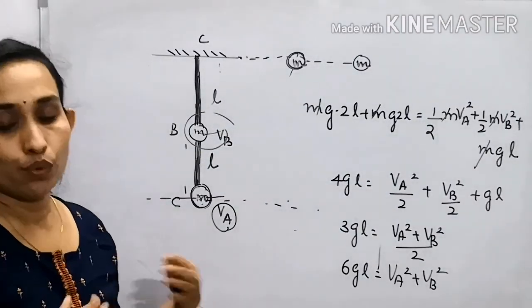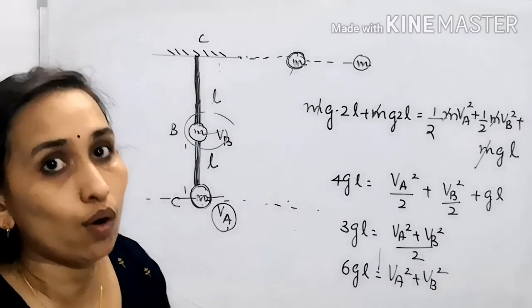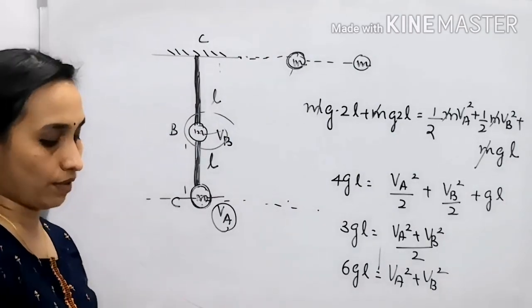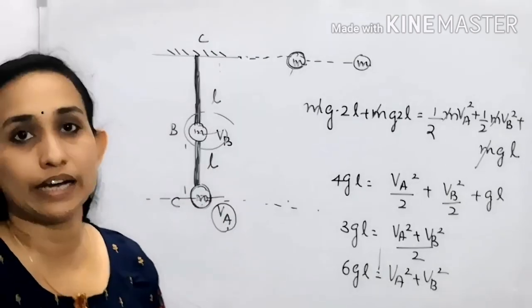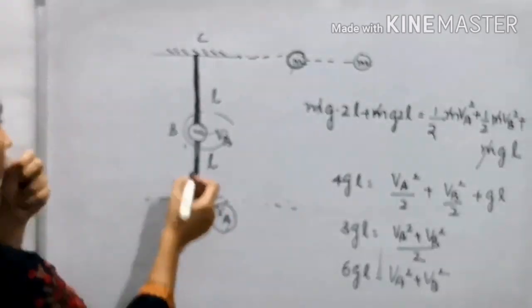But what is asked? You have to find either VA or VB. The question is to find VB, the speed of mass B. So you have to find VB here.